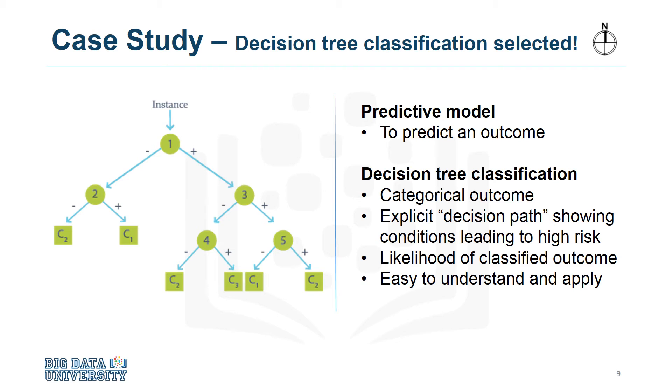This means the decision tree classifier provides both the predicted outcome as well as the likelihood of that outcome based on the proportion of the dominant outcome in each group. From this information, the analyst can obtain the readmission risk or the likelihood of a yes for each patient.